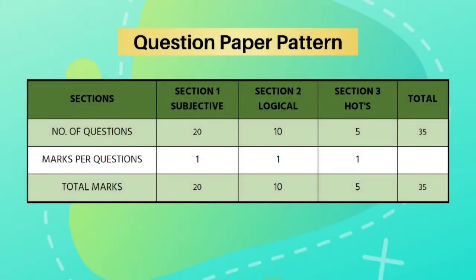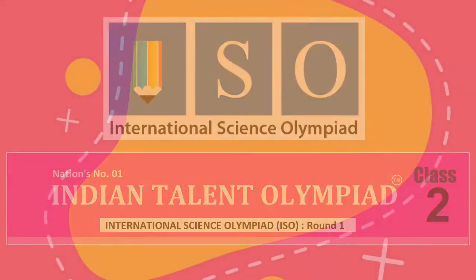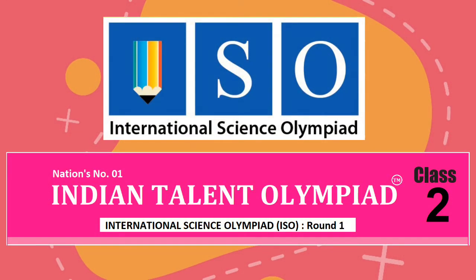The question paper consists of 35 questions in which 20 questions are subjective, 10 questions are logical reasoning, and 5 questions are high order thinking. This 35 question exam holds 35 marks. You can write the answers one by one in a notebook or blank piece of paper and then compare them with the answer key provided at the end of this question paper.